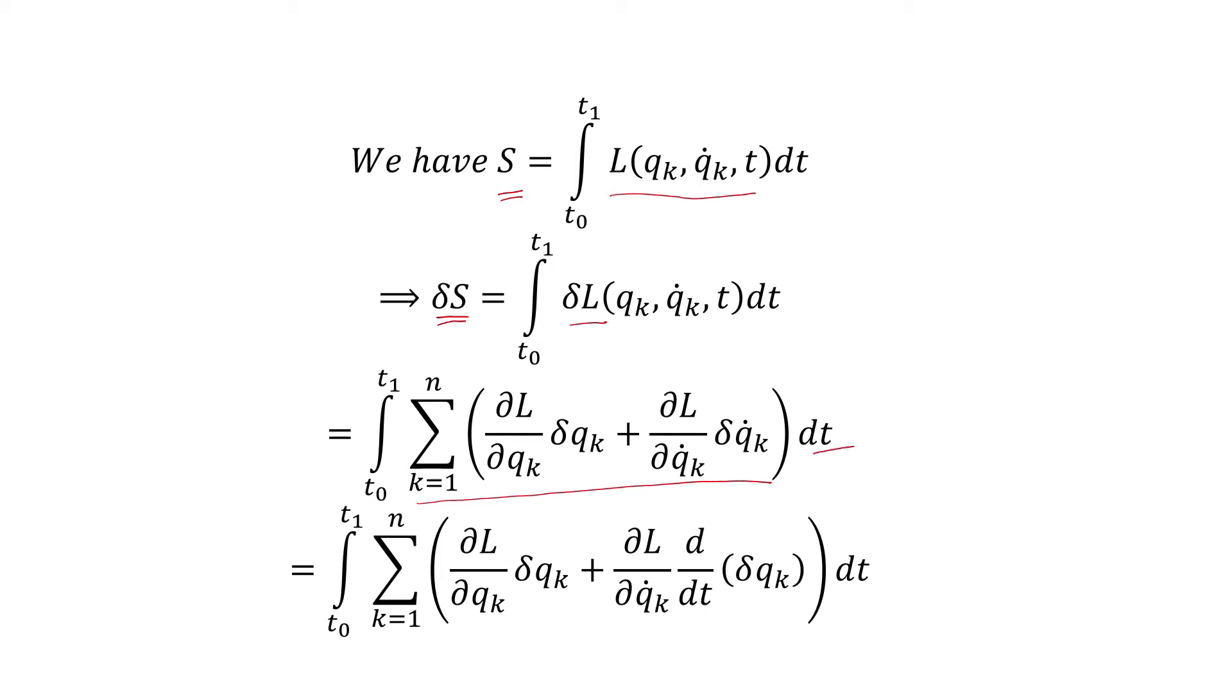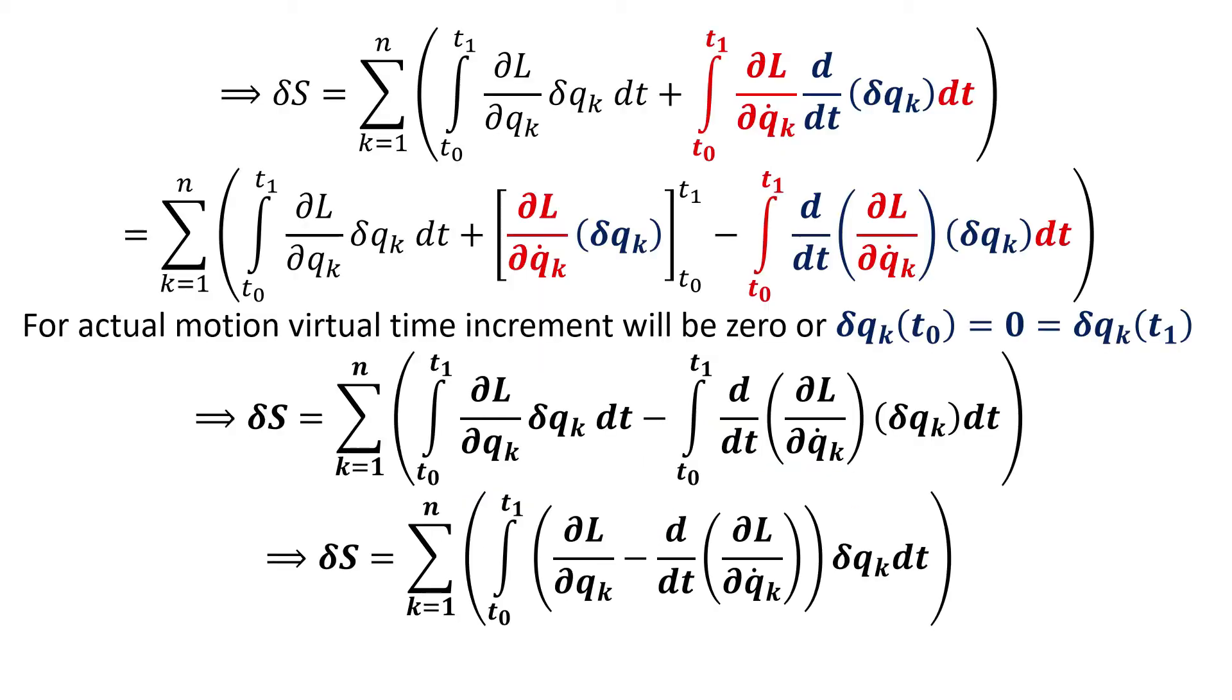In the next step, we write δq̇k as d/dt(δqk). This gives δS = Σ(k=1 to n) [∫(t0 to t1) (∂L/∂qk)δqk dt + ∫(t0 to t1) (∂L/∂q̇k)(d/dt(δqk))dt].